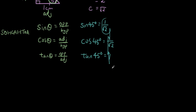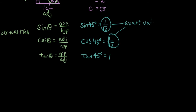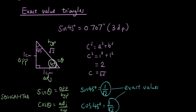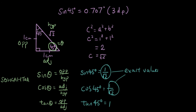These are what we call exact values because they are exact — more accurate than expressing it as a rounded number. Now what if we want sine, cosine, or tangent of an angle other than 45? Well there is another exact value triangle we can draw that will give us exact values for some other angles.